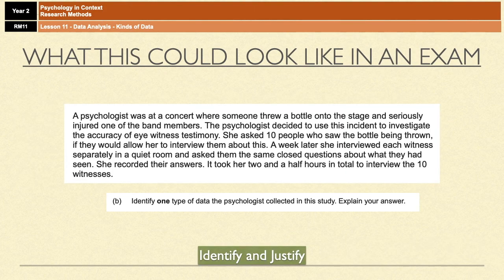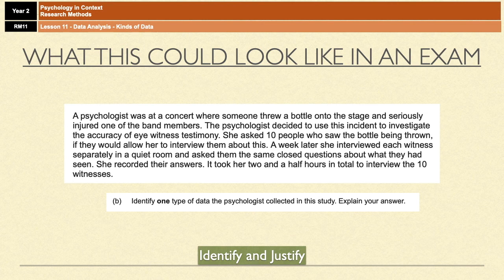A final question is a nice big one but it's not that hard: identify one type of data that the psychologist collected in the study and explain your answer. You get a big investigation with lots of information and more than one type of data — you just need to pick one out and explain why it is the type of data you say it is. For example, she interviewed witnesses separately in a quiet room and asked them the same closed question about what they had seen. There you've got primary data because she's conducting the interviews, but you've also got quantitative data because she's asking closed questions. You only need one example.